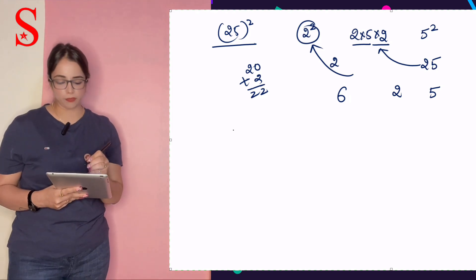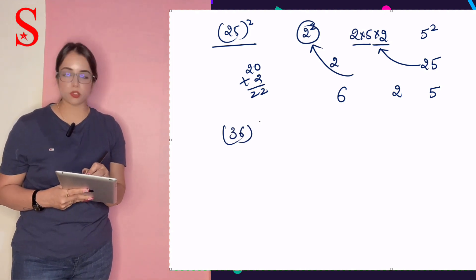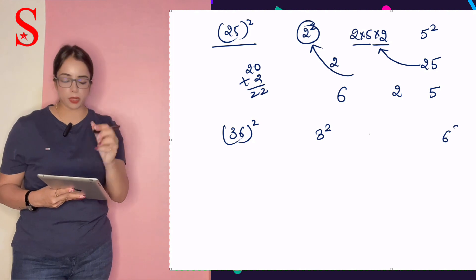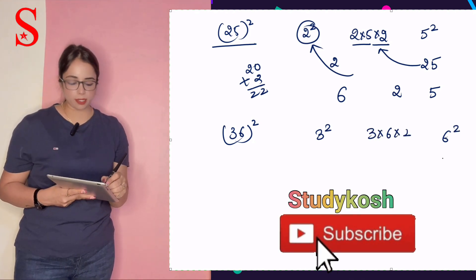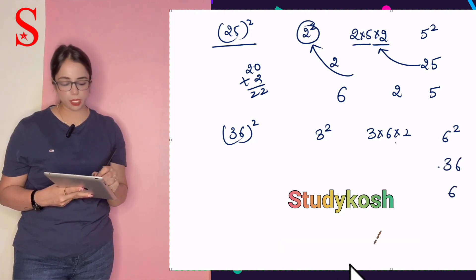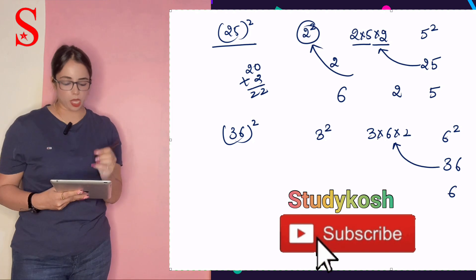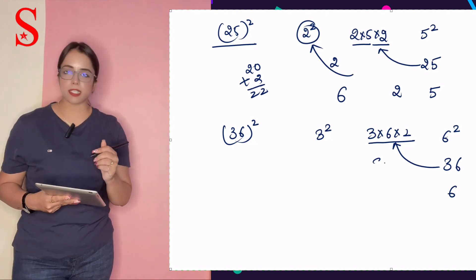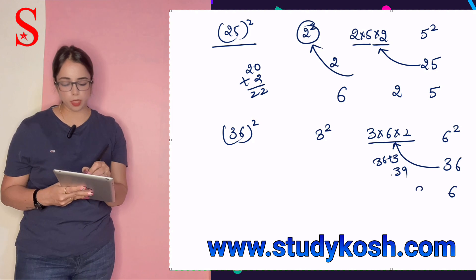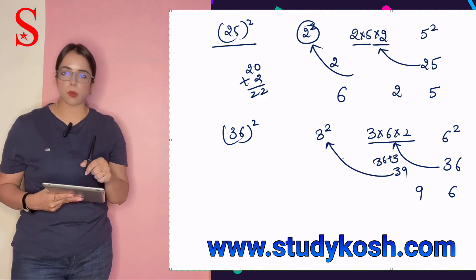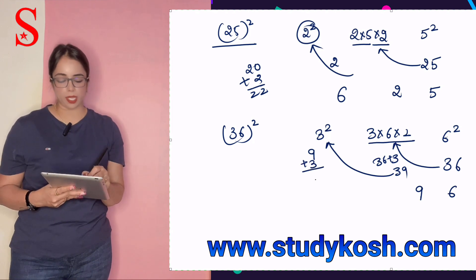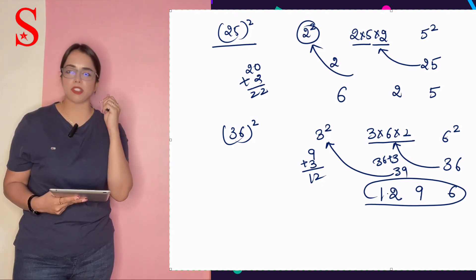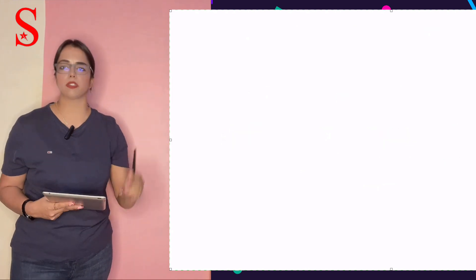Question number 2. Square of number 36. So 36 square. How are we going to find the square of this number? 3 square, 6 square. And in between 3 into 6 into 2. 6 square, that is 36. We'll write 6 here and 3 will be the carry to the next row. Now, next we have 3 into 6 into 2. 3 into 6 is 18. 18 into 2 is 36. 36 plus 3, that is 39. We'll write 9 here. 3 will be the carry to the next row. 3 square is 9. 9 plus 3 is 12. So what is the answer? That is 1296.